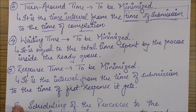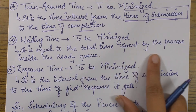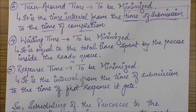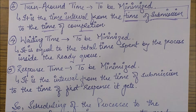Next is waiting time, which needs to be minimized. Waiting time is equal to the total time spent by the process inside the ready queue — that is, the time during which the process has not been assigned to the CPU and is simply waiting for it.